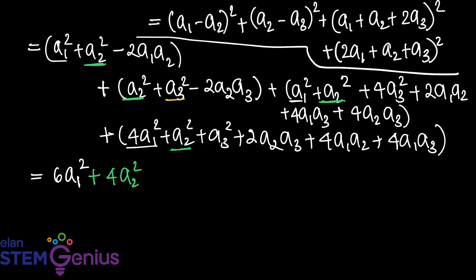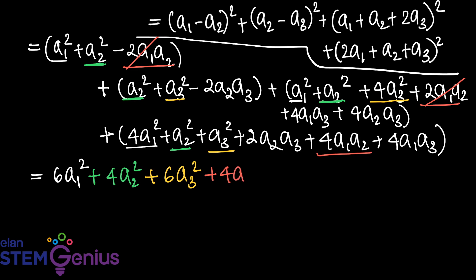After collecting and cancelling terms: the cross terms in a1a2, a2a3, and a1a3 cancel appropriately, leaving an expression in terms of a1, a2, a3 and their products.